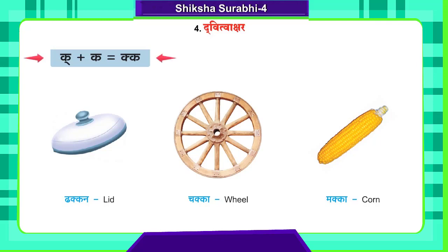See here: ik plus ka gives ikka. So in these words, letters are used like this — ikka, ikka like that. This is called Dvidvakshar: ik plus ka gives ikka.